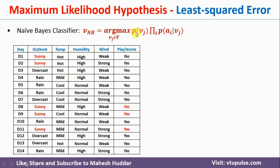In this case, if you want to calculate the probability of Vj, the probability of Vj is the probability of 'no' and the probability of 'yes'. There are 5 'no' examples and 9 'yes' examples, so probability of 'no' is 5/14 and probability of 'yes' is 9/14. That is quite easy to calculate.